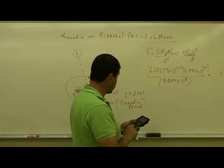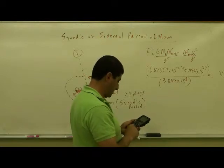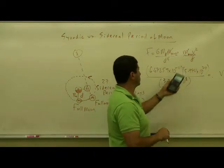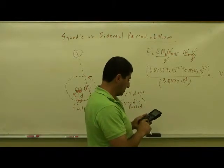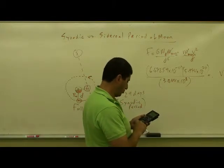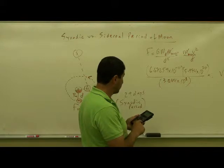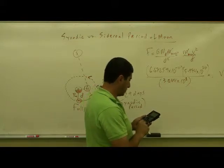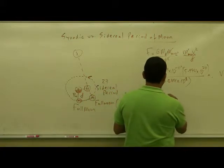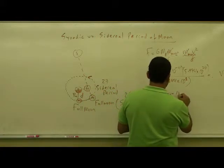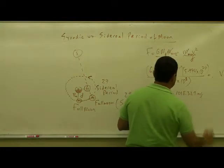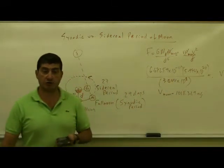6.67259 times 5.974 times 10 to the power, and then the power of the 10 is 13, divided by 3.844, divided by 10 to the power of 8. So the velocity of the Moon is going to be 1018.329 meters per second going around the Earth.